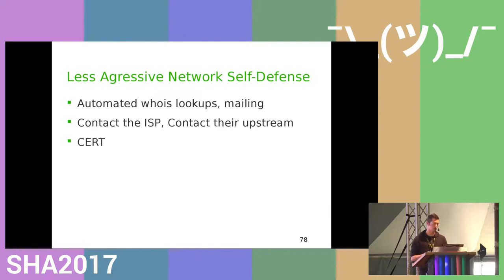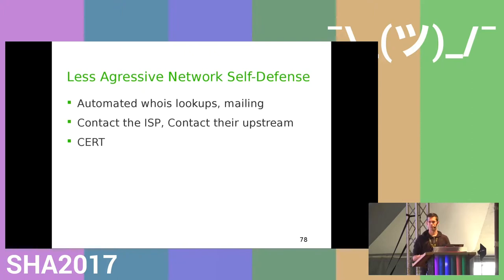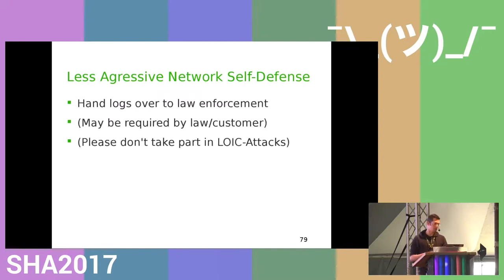You can do automated WHOIS lookups and automated mailings to contact ISPs and upstreams. For example, if you get attacked by a hundred thousand WordPress instances, just hand the data to CERT and let them handle it — they'll try to contact owners and fix it. Also, sometimes it's required by law to hand over logs. If people take part in a layer 7 attack from their home internet connection, that's not a very wise thing to do.